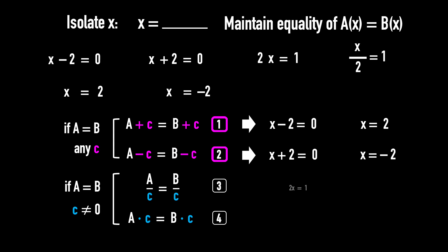Example 3. 2X equals 1. Apply rule number 3. Divide both sides by 2. And simplify. We get X equals 1 half.